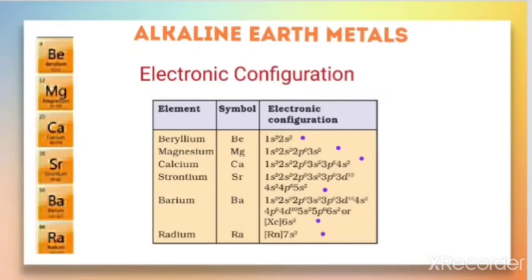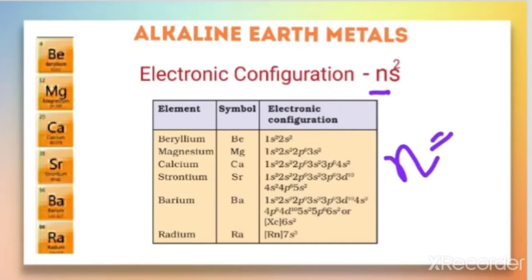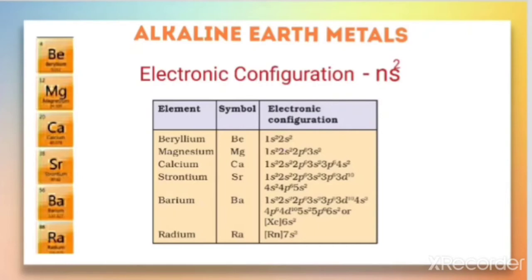So the general electronic configuration for these elements can be written as ns², where n is the principal quantum number, and the value of n gives the period in the periodic table. For example, beryllium has its last electron in 2s, so n = 2, meaning it belongs to the second period. In this way we can find the period of any element in the periodic table.